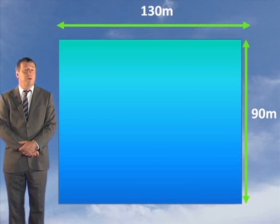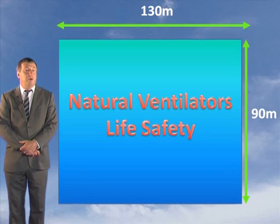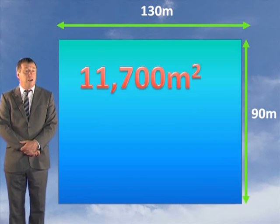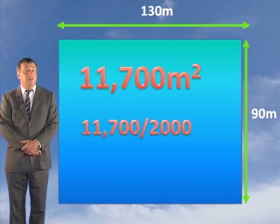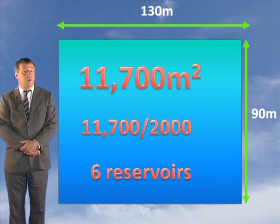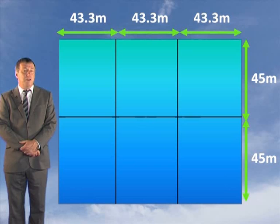Example two: determine the minimum number of reservoirs for a factory building 130 meters by 90 meters fitted with natural ventilators for life safety. The maximum size is 2,000 square meters and our building is 130 by 90, which equals 11,700 square meters. We need a minimum of six reservoirs, as five times 2,000 equals 10,000 which is less than 11,700, and six times 2,000 equals 12,000 square meters which is greater than 11,700. So we must have at least six reservoirs. We check that no dimension exceeds 60 meters with the aid of a sketch.